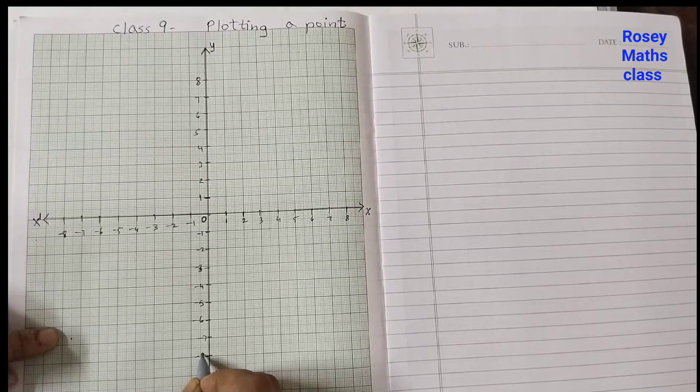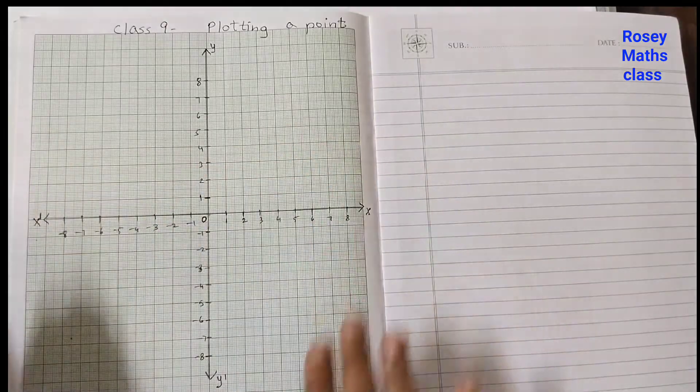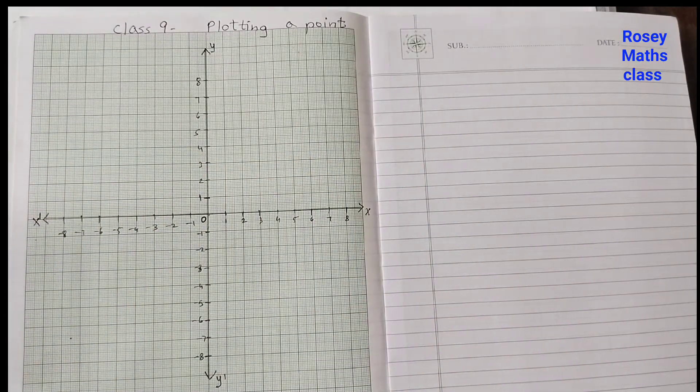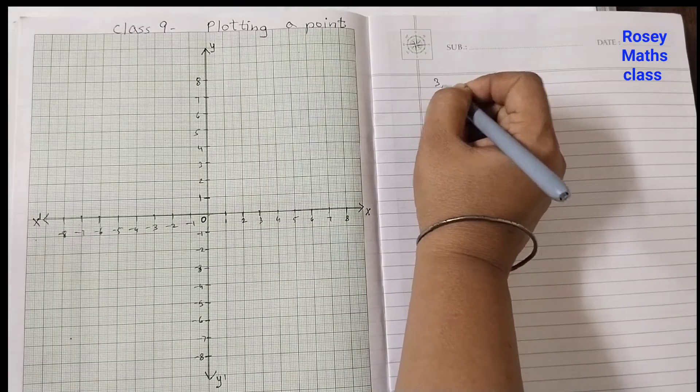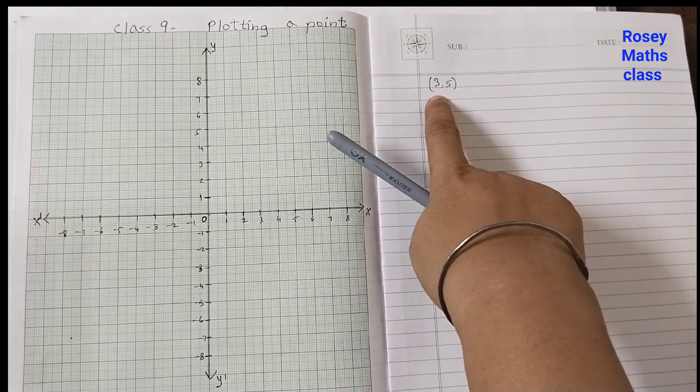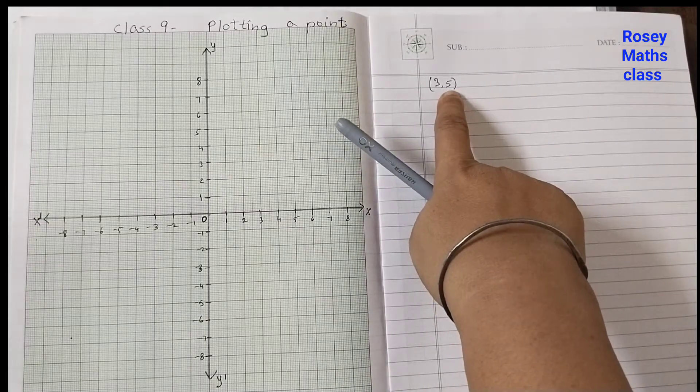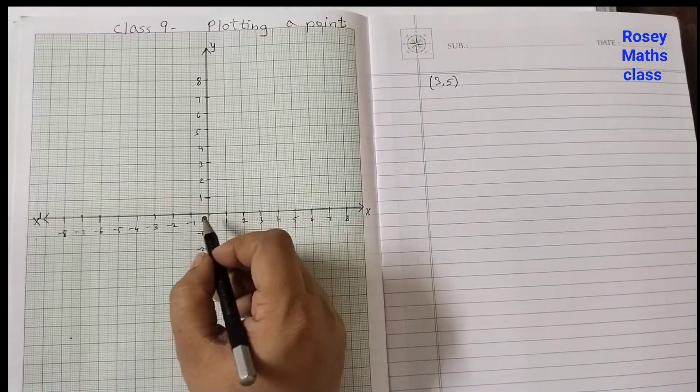Let's say there's a point three comma five. Three is for the x-axis and five is for the y-axis. So from the origin you move three units to the right: one, two, three.